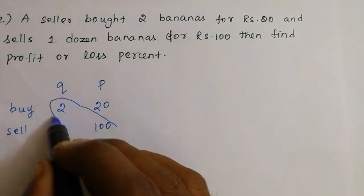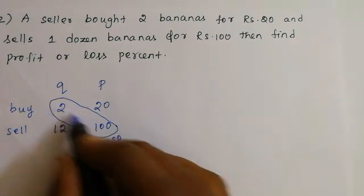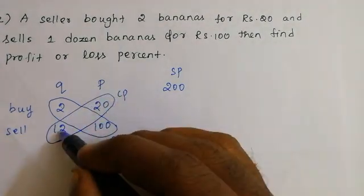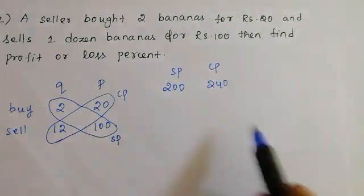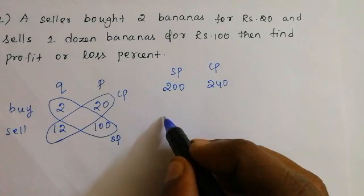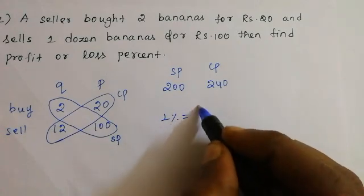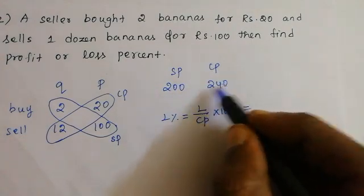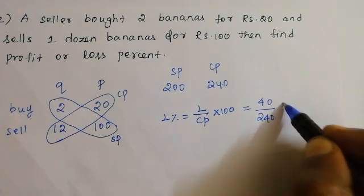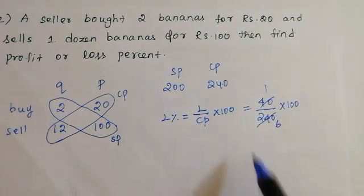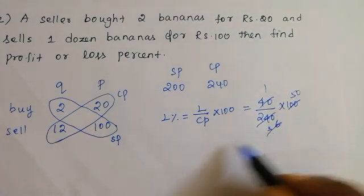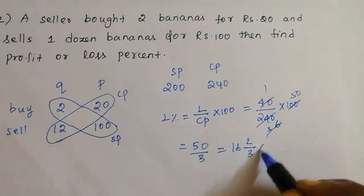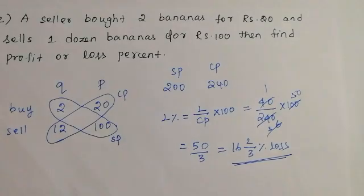This is selling price. This cross multiply is cost price. So 10 into 20 is 250, so this is cost price. If you have 250, you will have 200, so this is a loss. Loss percentage is loss by cost price into 100. Loss is 50 by 250 into 100. This cancels 50 times, 3 times — answer is 50 by 3.